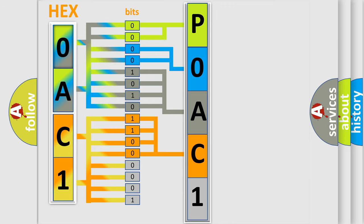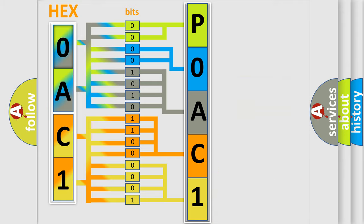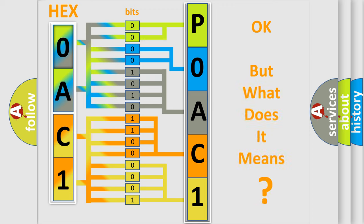A single byte conceals 256 possible combinations. We now know in what way the diagnostic tool translates the received information into a more comprehensible format. The number itself does not make sense to us if we cannot assign information about what it actually expresses.